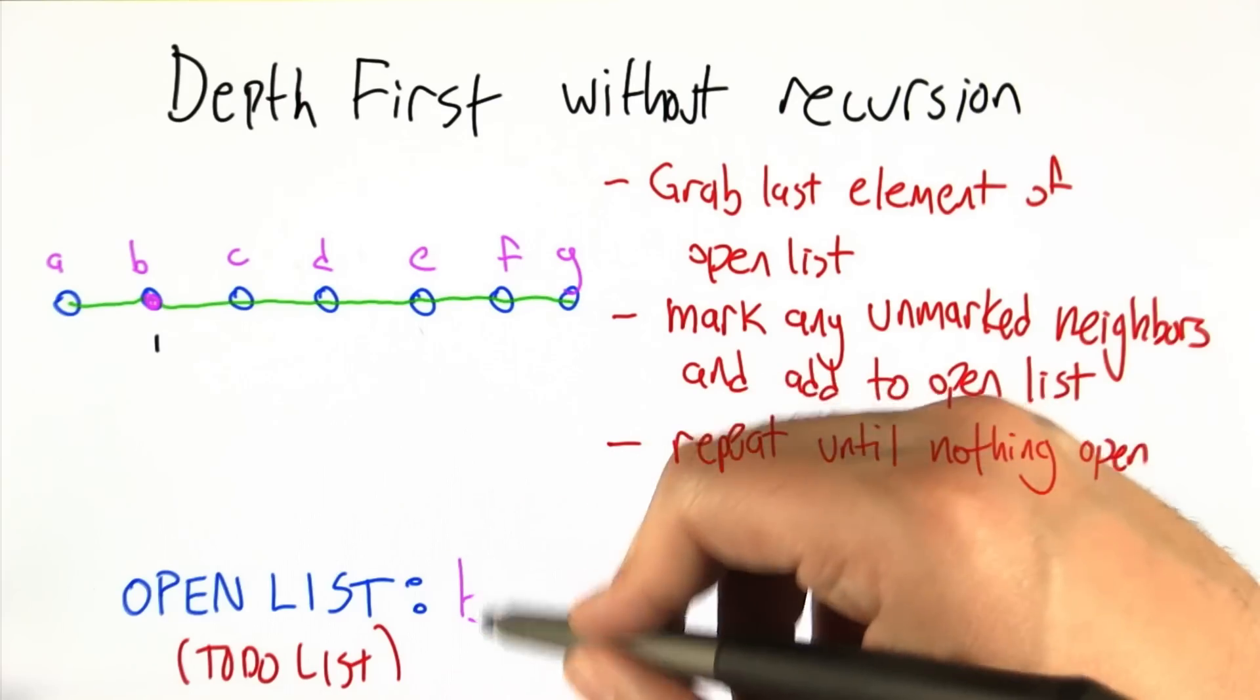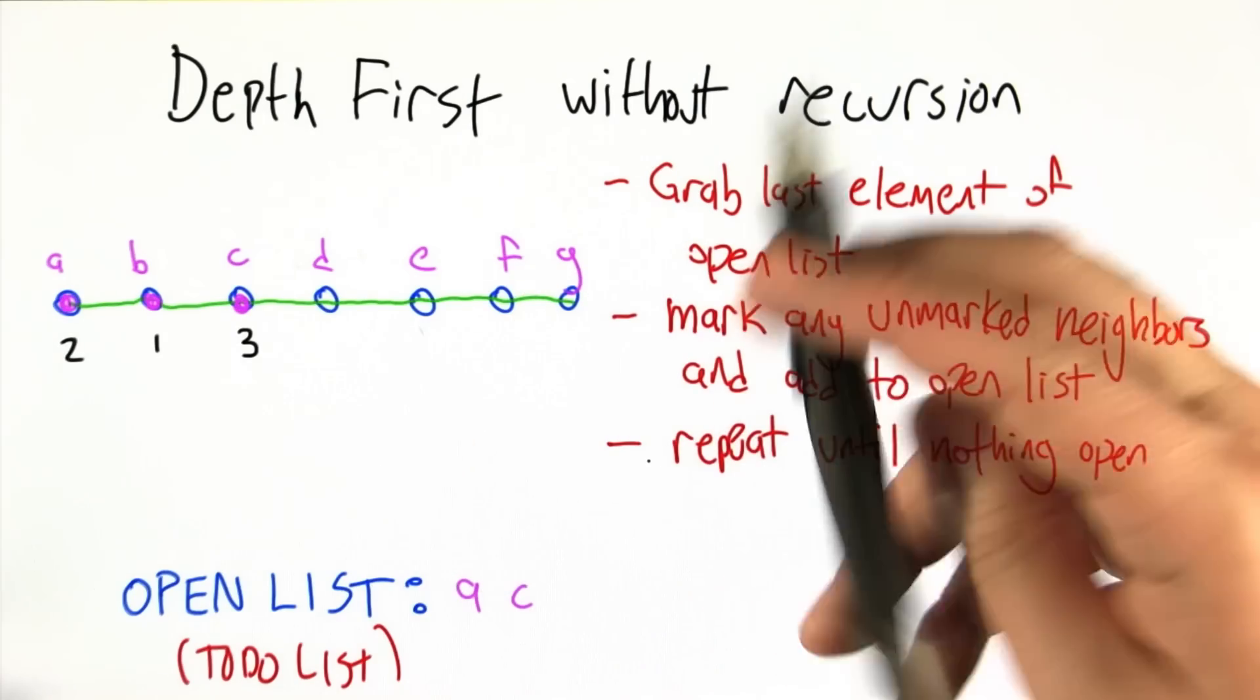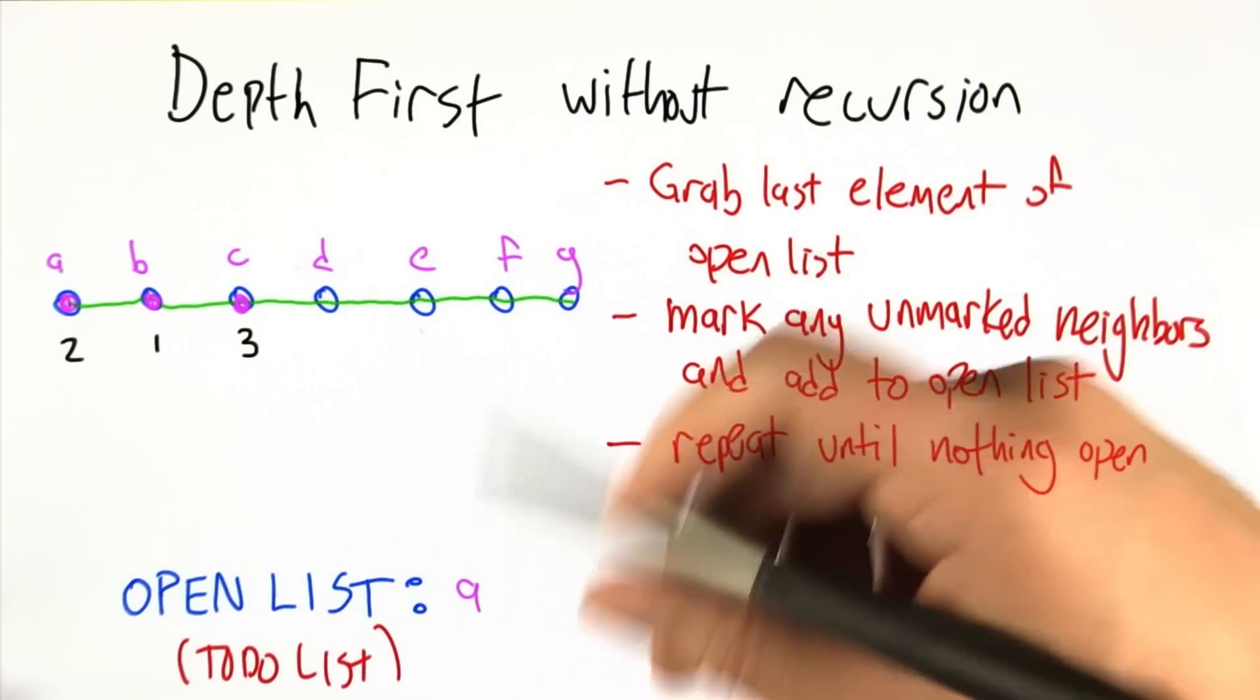So we start off with B, the only thing on the open list. We visit both of the neighbors of B, add them to the open list, pull C off the open list, add its neighbors.